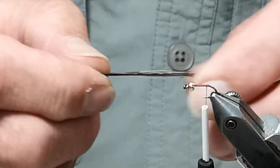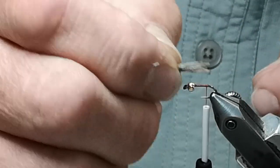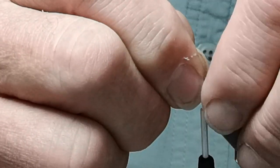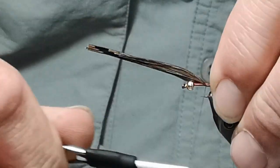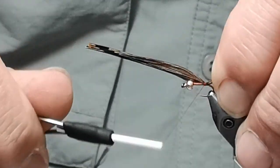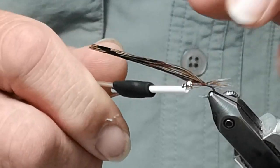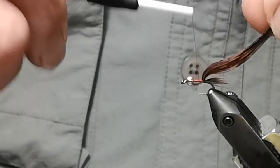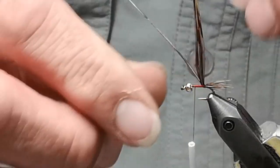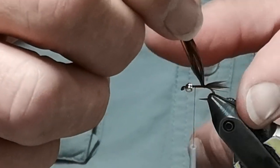Now when I do this fly, I like to have the tail almost as long as the body. I don't like a really short, tiny butt of a tail. I like it to stick out.